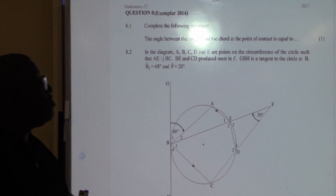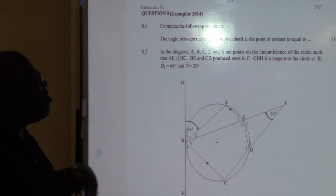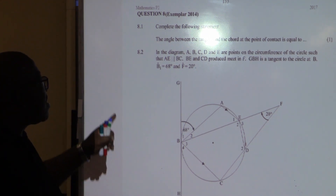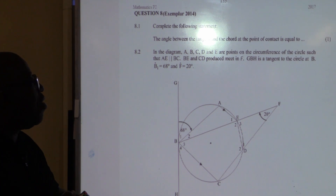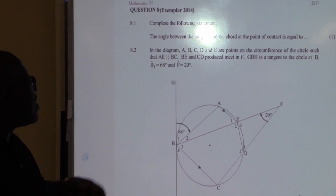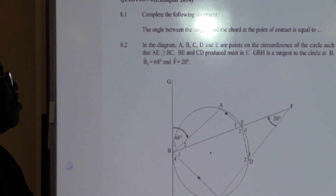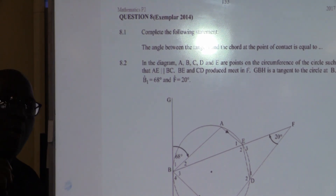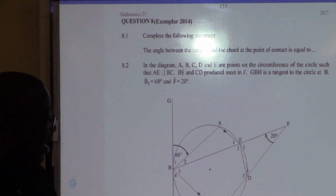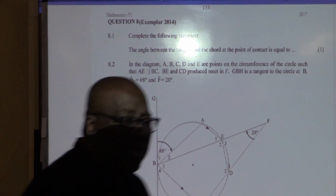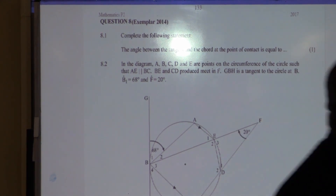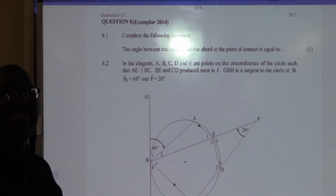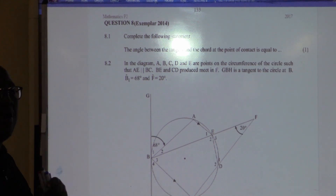As you see here in the example of 2014, it was question 8.1: complete the following statement. It means that we're giving you a theorem and you've got to complete it. The angle between the tangent and the chord at the point of contact is equal to the angle subtended by that chord in the alternate segment. That is the tan-chord theorem.